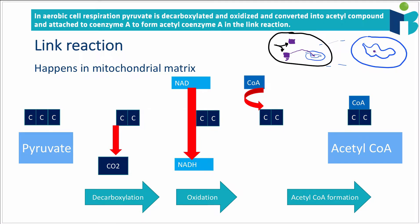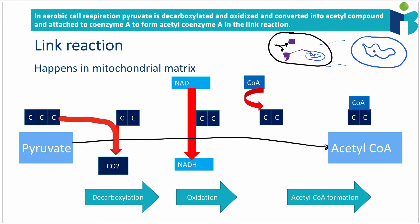So what happens to pyruvate in the link reaction? Pyruvate goes through a couple of steps until it eventually becomes acetyl-CoA. The first thing that happens is that this three-carbon molecule of pyruvate loses one carbon to produce CO2, leaving behind a two-carbon molecule. You don't need to know the name of this intermediate compound — just that pyruvate first gives off CO2, and that process is called decarboxylation. Decarboxylation means losing carbons, as opposed to carboxylation which is gaining carbons.